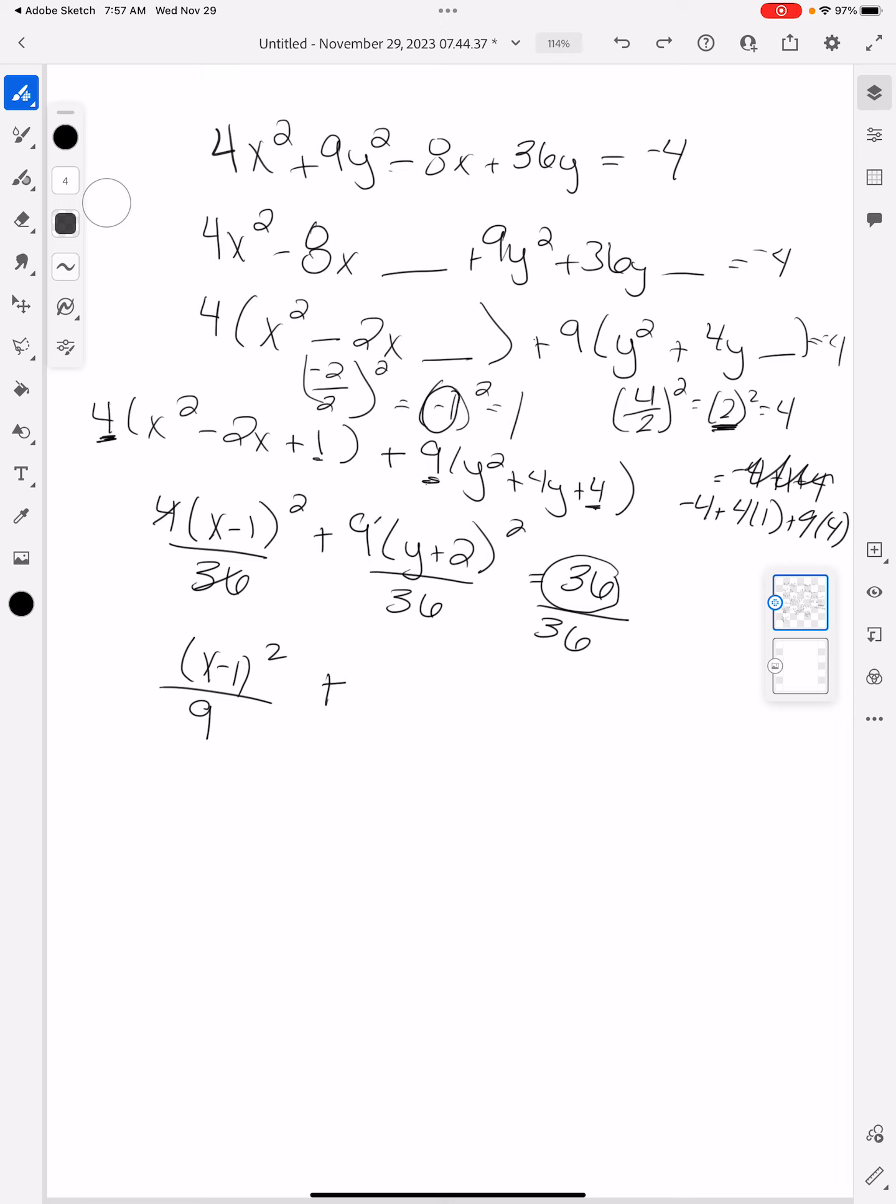Then I'm going to have the 9 and the 36 cancel, which is going to give me 4. And then I'm going to have it equal to 1. And here is my ellipse in standard form.